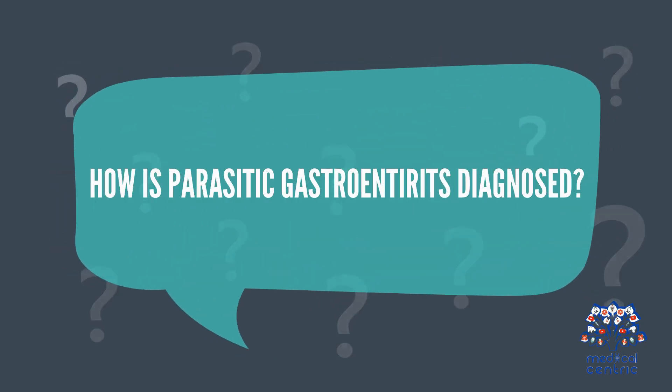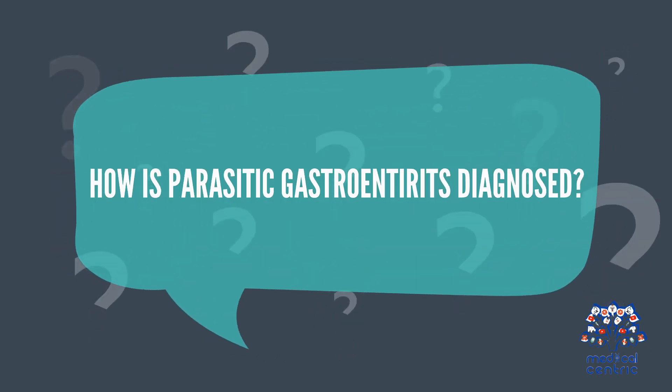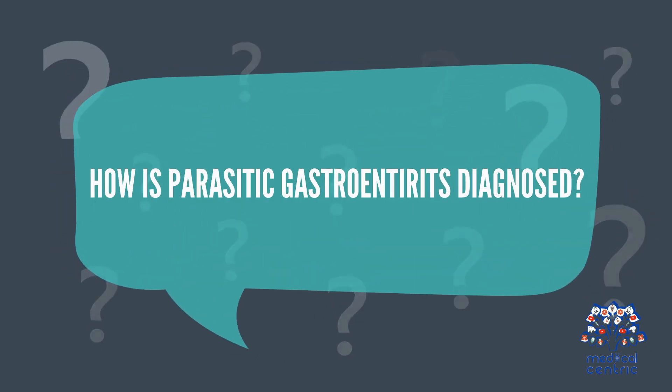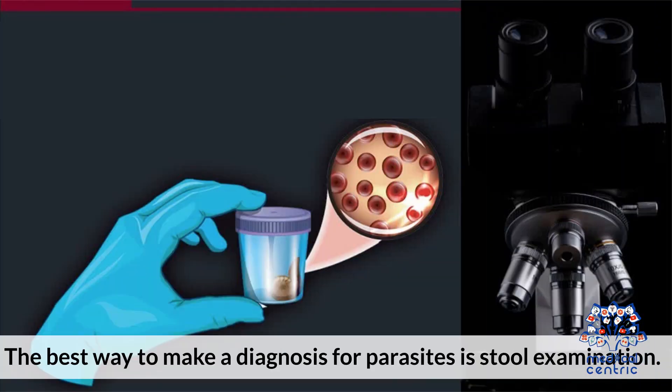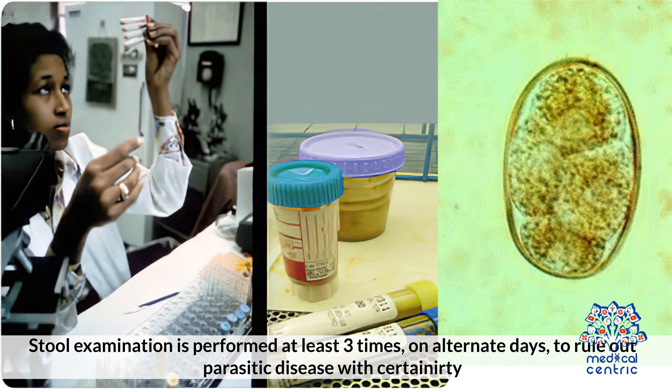How is parasitic gastroenteritis diagnosed? The best way to make a diagnosis for parasites is a stool examination. Stool examination is performed at least 3 times on alternate days to rule out parasitic disease with certainty.